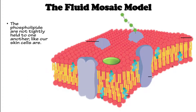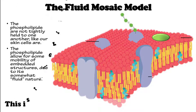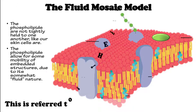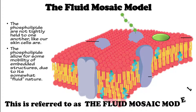The phospholipids are not tightly held to one another like our skin cells are. The phospholipids do allow for some mobility of the embedded structures due to their somewhat fluid nature. This is referred to as the fluid mosaic model of the cell membrane.